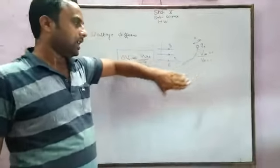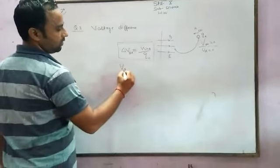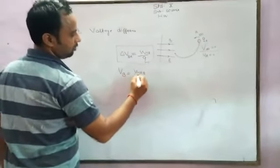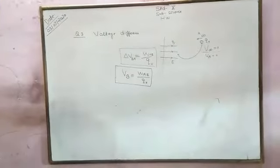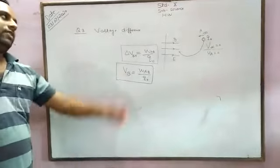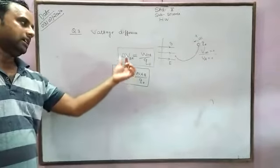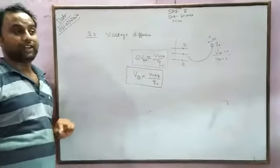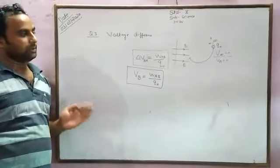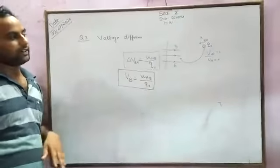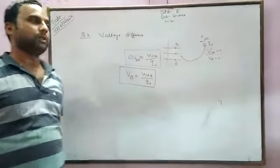With respect to this reference point, we can identify the potential at point B. Hence we can say that potential of B is equal to work done from A to B divided by test charge. The absolute value of the potential cannot be determined at any point. If we are taking a reference level, then we can find the potential at a point. We have to determine the potential difference, taking one point as a reference, and hence we can assume that the reference level is taken to be zero potential. With respect to this we can determine the potential of the point.